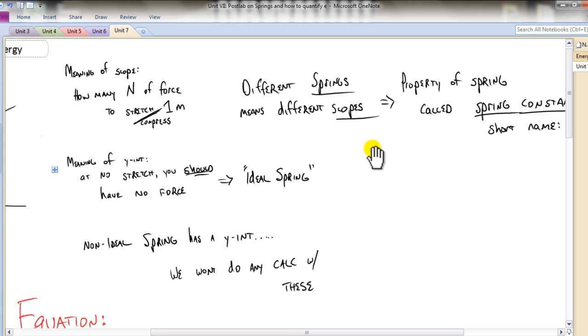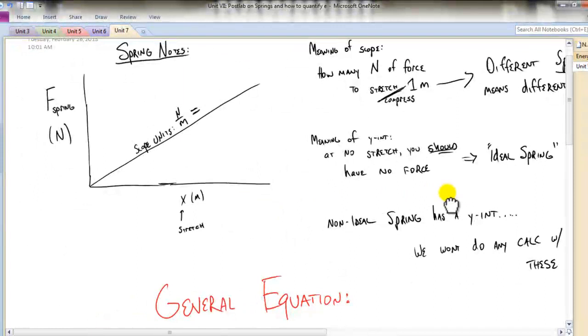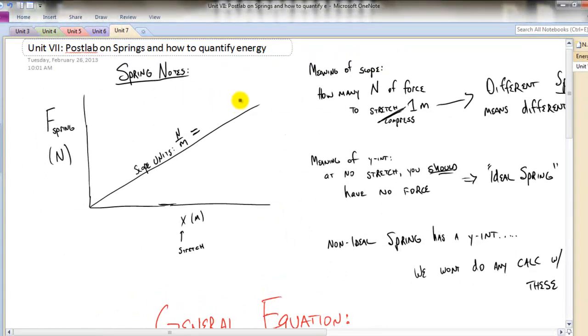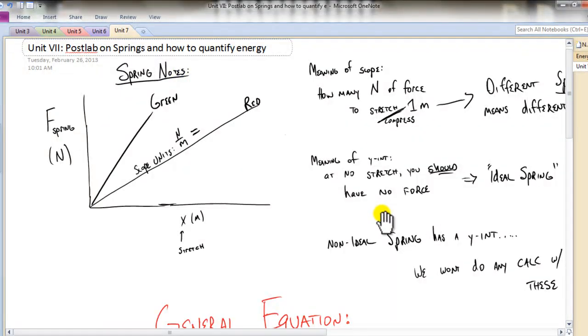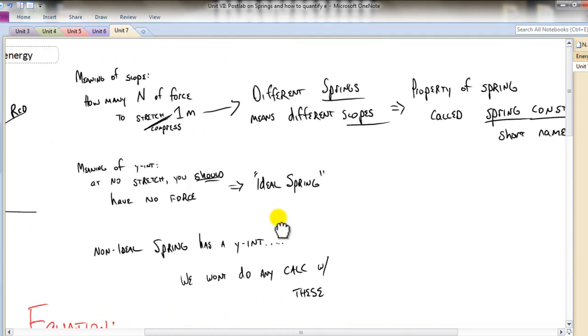What we understand from here is this idea that different springs means different slopes. So if I go back to the graph, I can realize this might have been the red spring, and then maybe the green spring had a different slope. Well, the only reason why it had a different slope was there was a certain property of that spring.